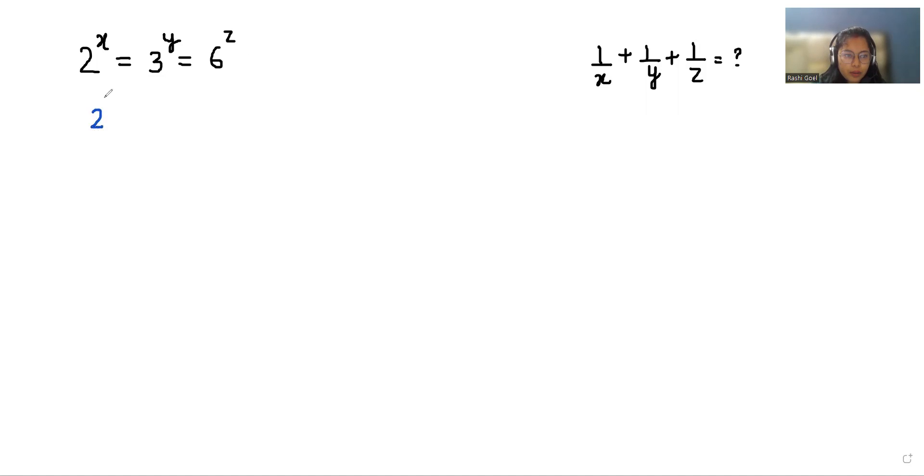So first I'm going to write 2^x = 3^y = 6^z and take it as equal to n constant. So we can say that 2^x = n. Similarly, 3^y is also equal to n and 6^(-z) is equal to n also.